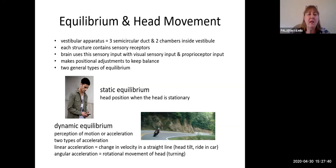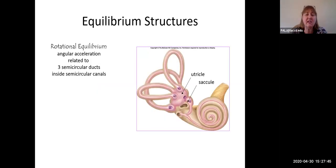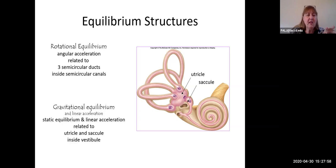Looking at the rotational equilibrium structures, all those angles are going to be related to the three semicircular ducts. That kind of makes sense—the circles are going to have to do with circular movements. In contrast, the gravitational equilibrium, the linear accelerations, that static stuff, that's all related to the utricle and saccule which are inside the vestibule.